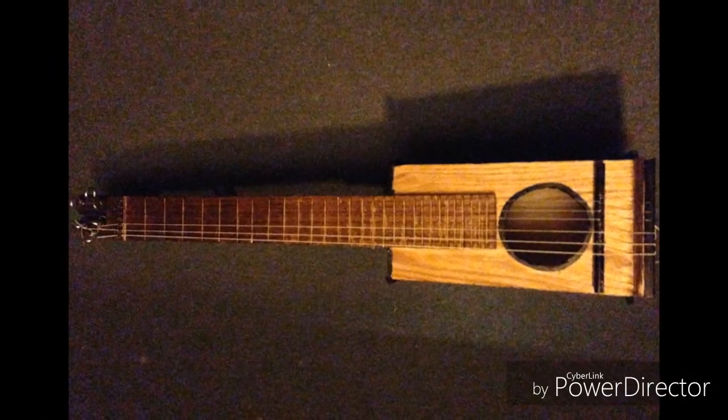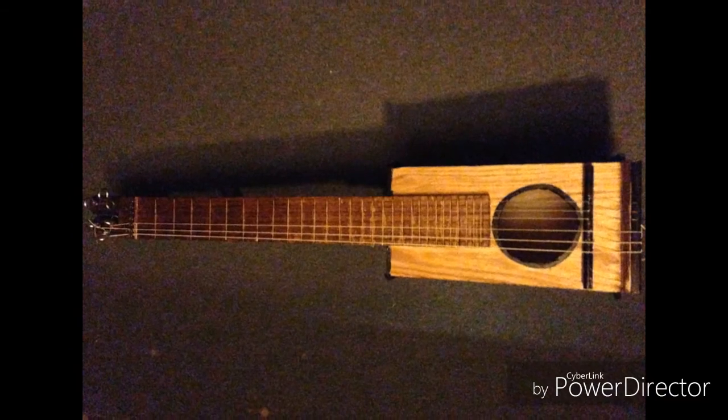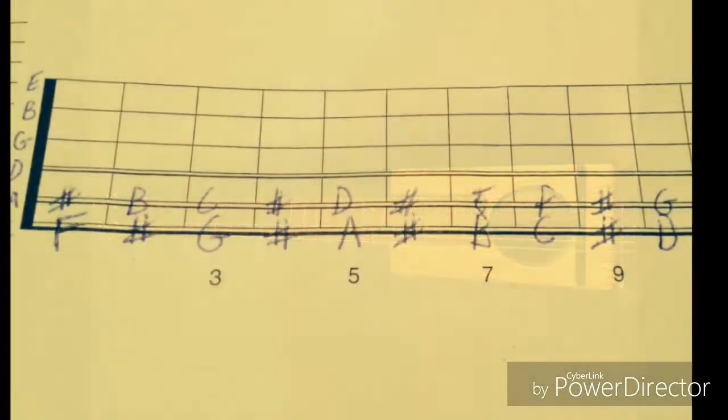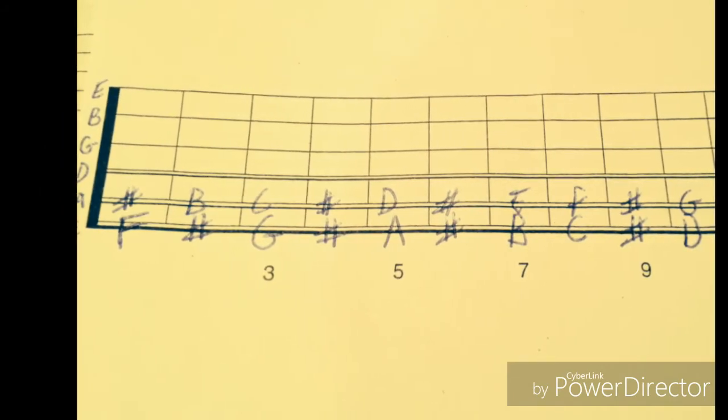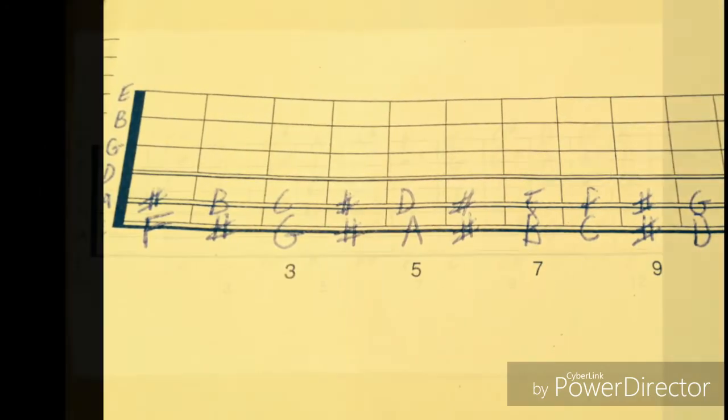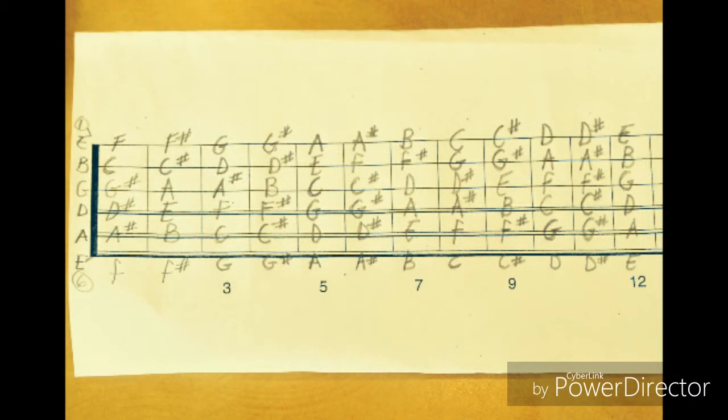In understanding this concept, let's go to the sixth string and call out each of the notes beginning with the open E string. Do this for all the frets with the pattern repeating itself. Do this until you get to the twelfth fret. Then go to the next string and do the same. And then do this for all of the following strings.